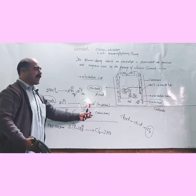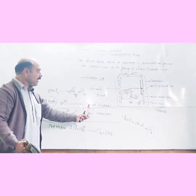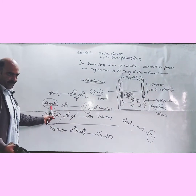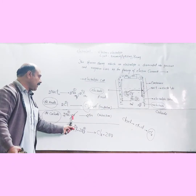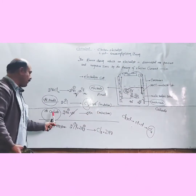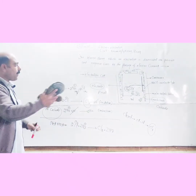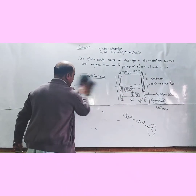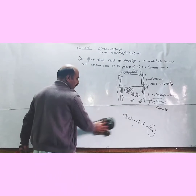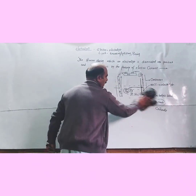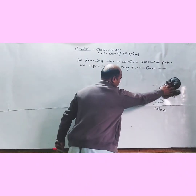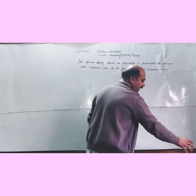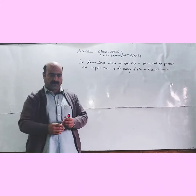To help students remember the difference between oxidation and reduction, here is a simple memory trick. Many students get confused about whether loss of electrons is oxidation or reduction. Looking at a diagram, students should be able to identify which is oxidation and which is reduction using a simple trick.